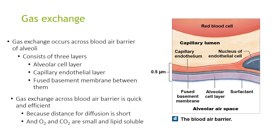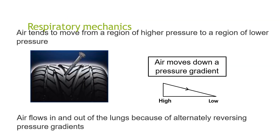Gas exchange occurs across the blood-air barrier of the alveolus and has three layers: a fused basement membrane between them, the alveolar cell layer, and the capillary endothelial layer. Gas exchange across the blood-air barrier is quick and efficient because the distance for diffusion is short, and oxygen and carbon dioxide are small and lipid soluble.